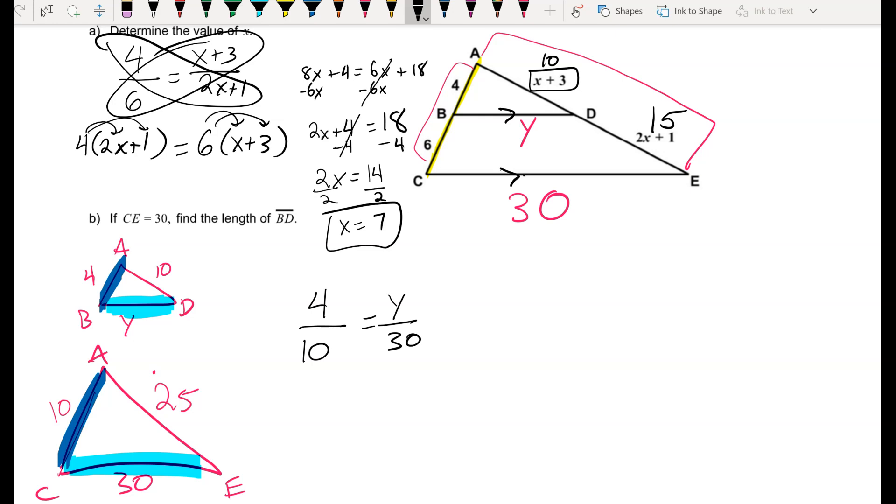So I can set up a proportion, 4 over 10 equals y over 30. Again, because those segments are parallel, we have congruent corresponding angles, and we're able to say these triangles are similar, and therefore their sides are in proportion. If I cross multiply, 4 times 30 is 120, 10 times y is 10y, and if I divide out the 10, I find that my missing length BD is just 12.